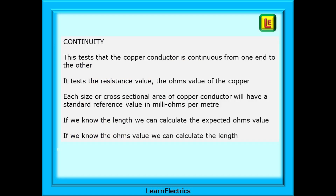When continuity testing we are testing that the copper conductor is continuous from one end to the other. It tests the resistance value, the ohms value of the copper. Each size or cross sectional area of copper conductor will have a standard reference value in milliohms per meter. If we know the length we can calculate the expected ohms value and make a comparison, and if we know the ohms value we can calculate the length.